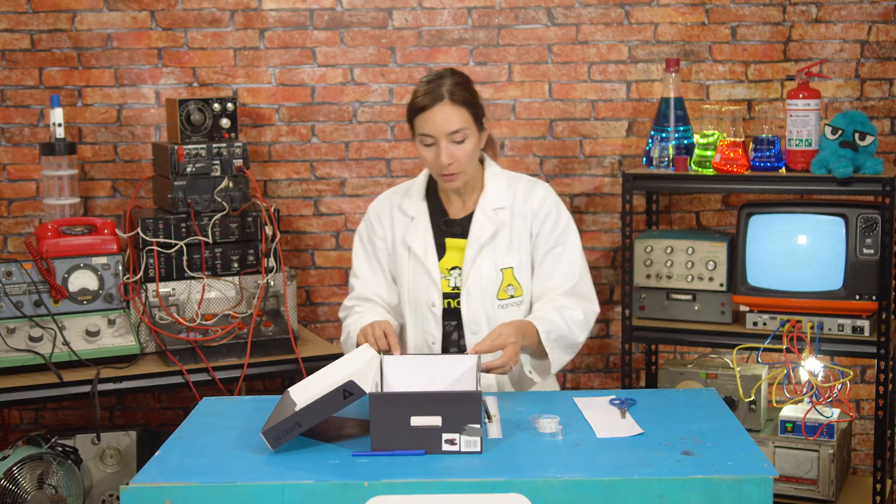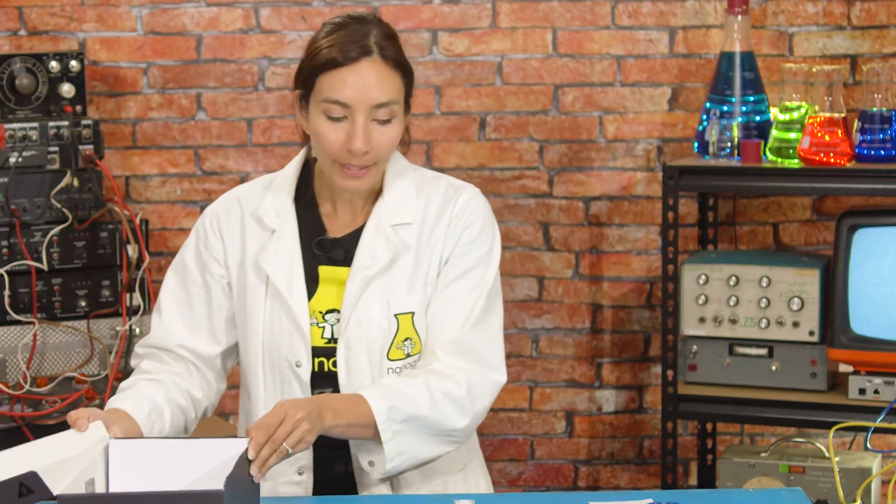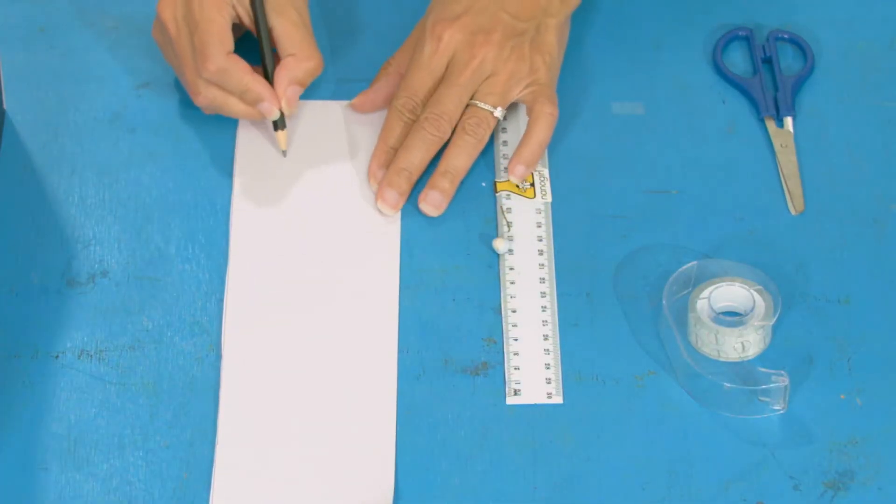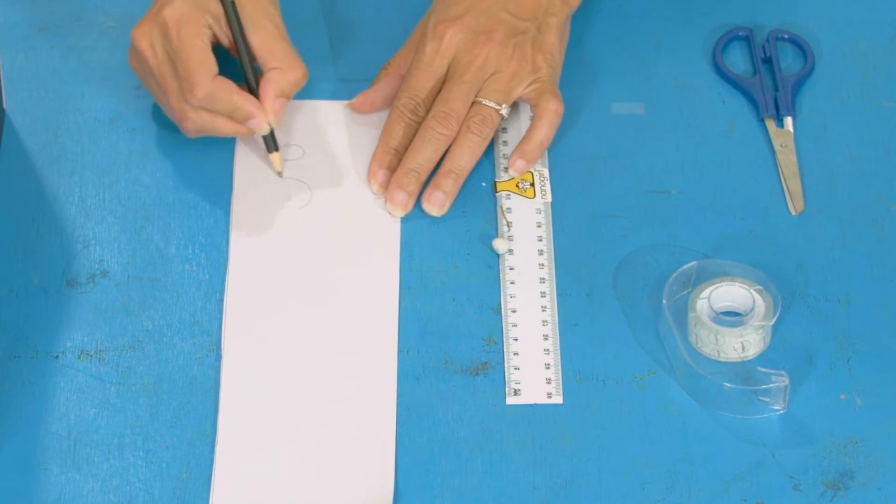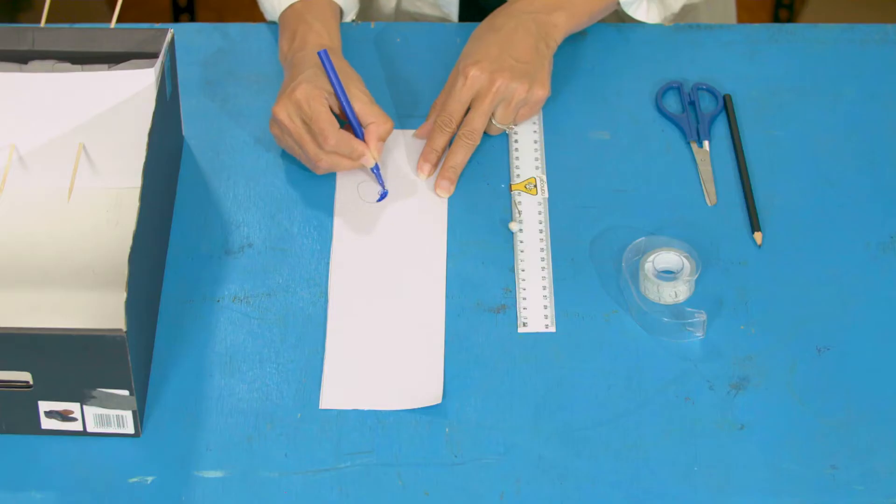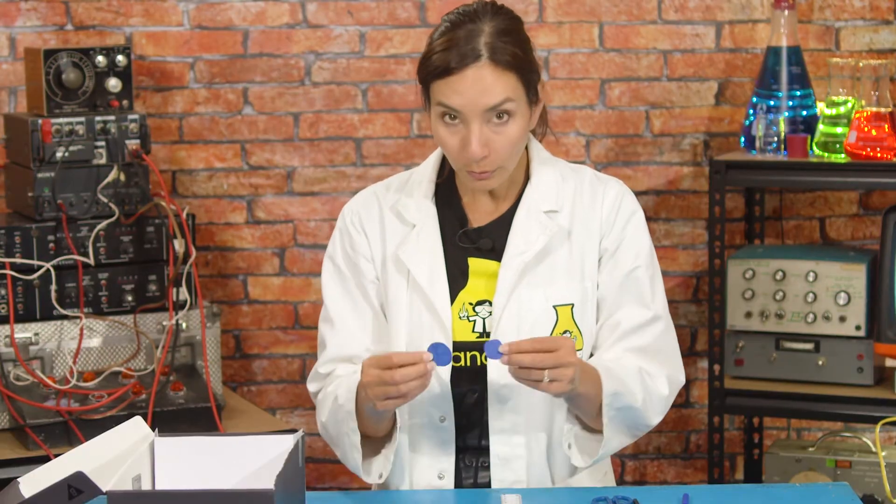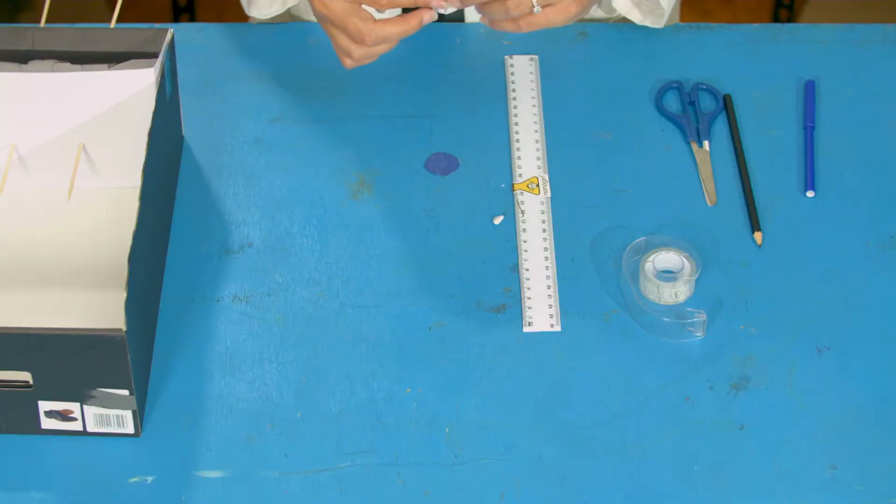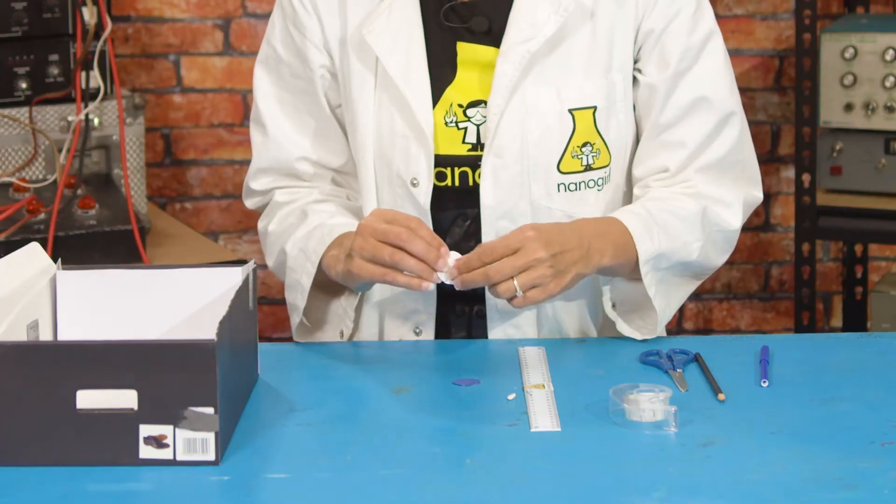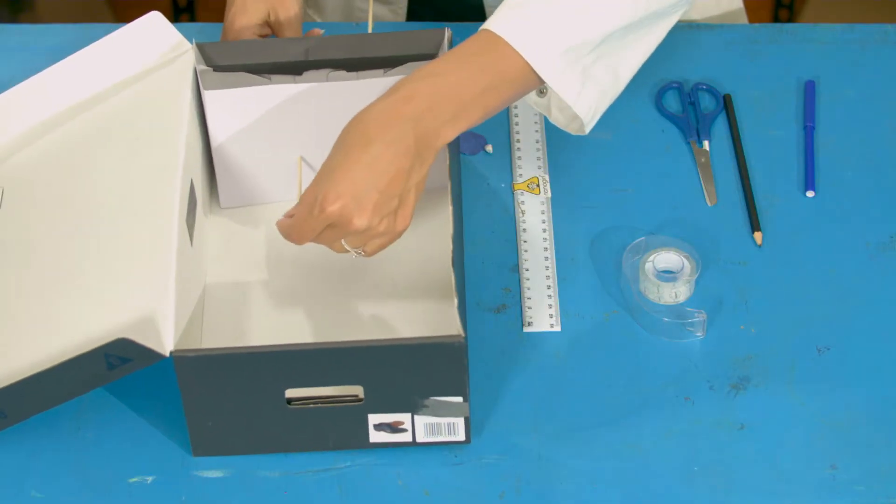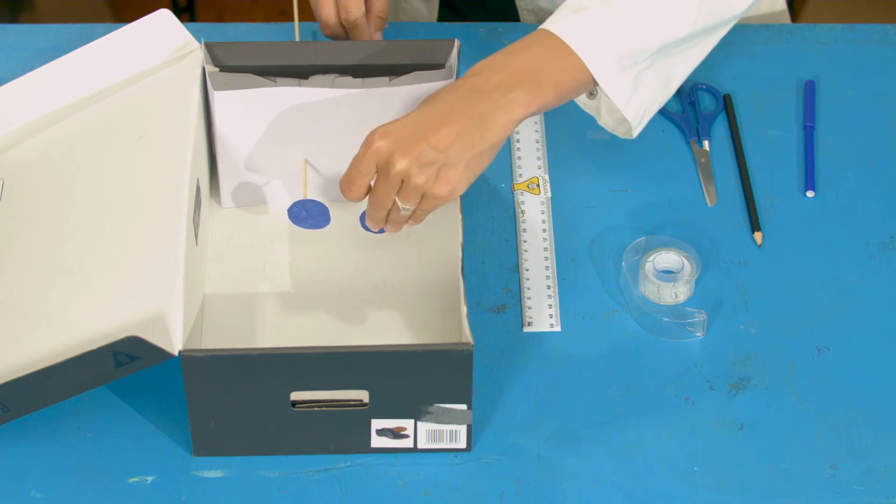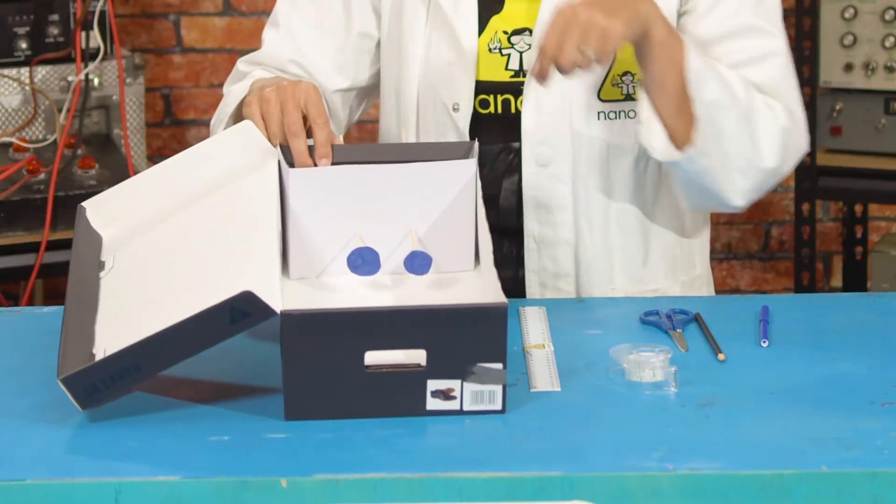Now on the end of these skewers you want to make two little circles. So you might want to draw around a coin or just freehand some circles. One of them wants to be bigger than the other. I'm going to color those in and then cut them out. Okay, so here we have these two circles. You can see one is bigger than the other. We're going to put a little bit of blue tack on the end and we're going to stick one on each of our skewers. So I'll put the big one over here, put the smaller one on the other side. Okay, and so you can see that they're two different sizes.